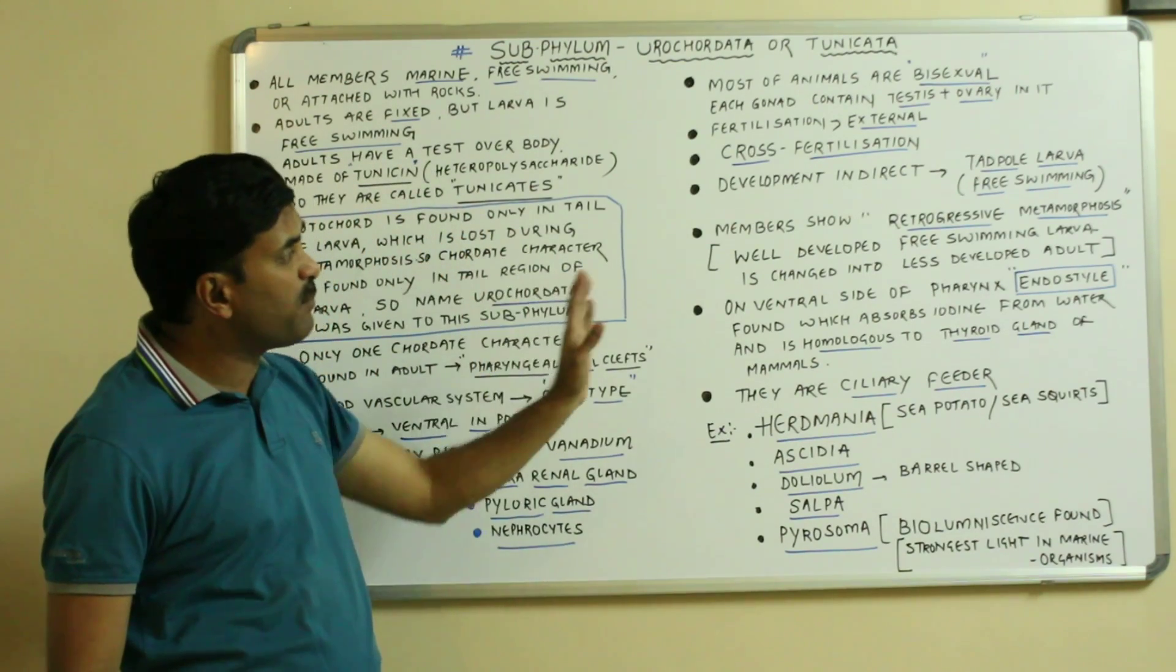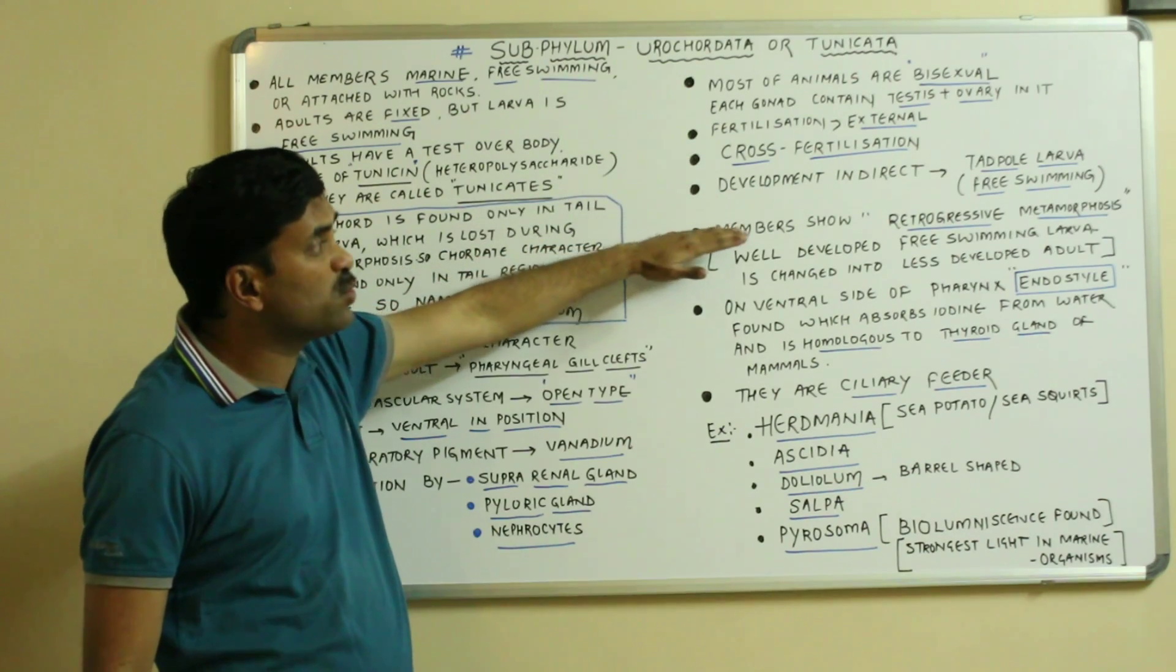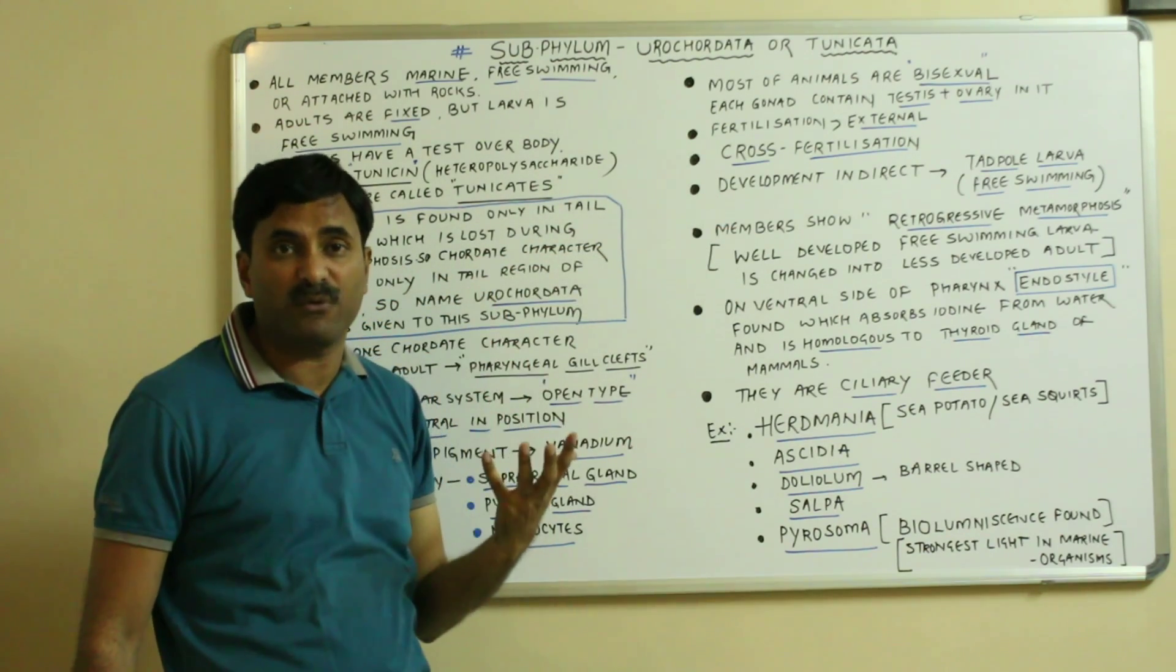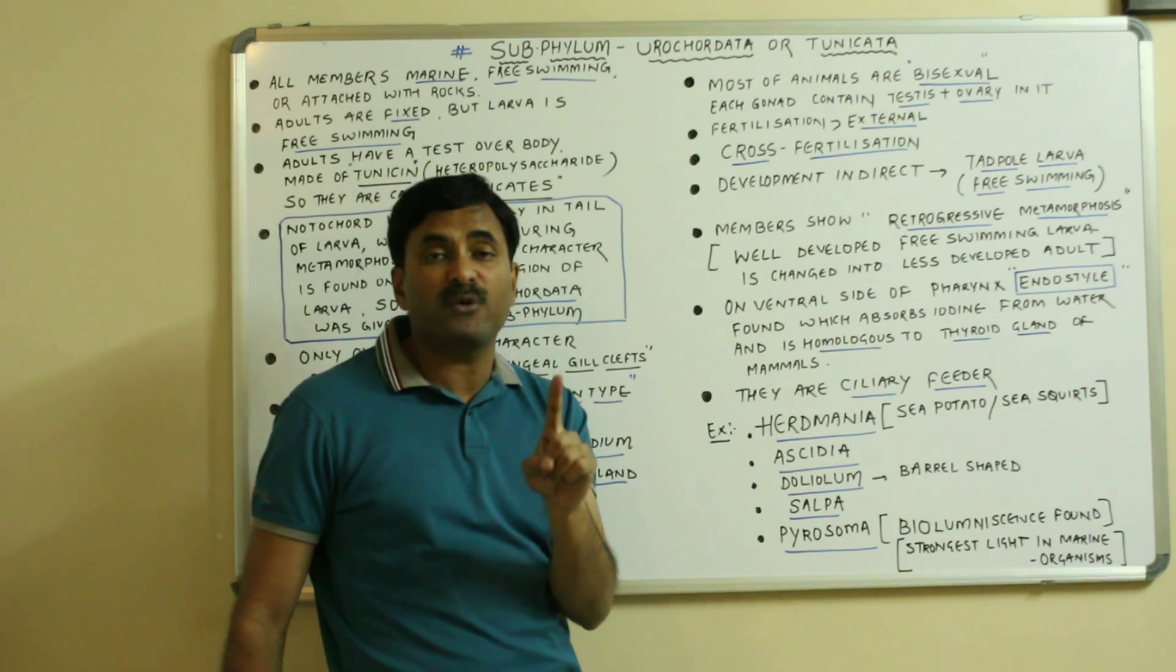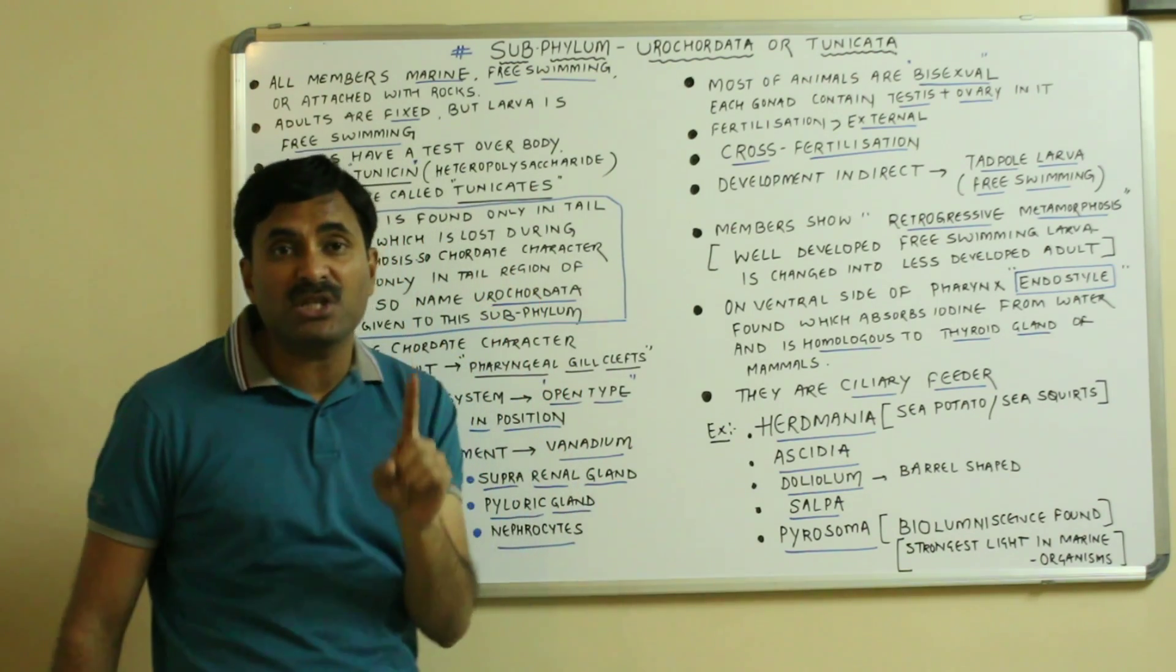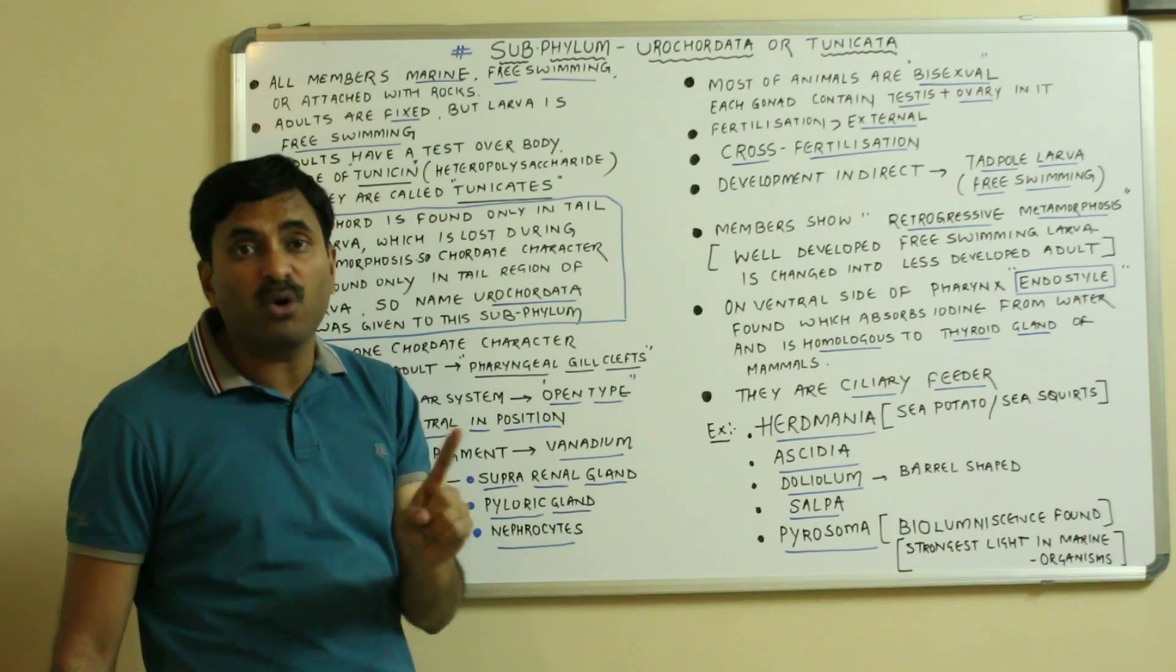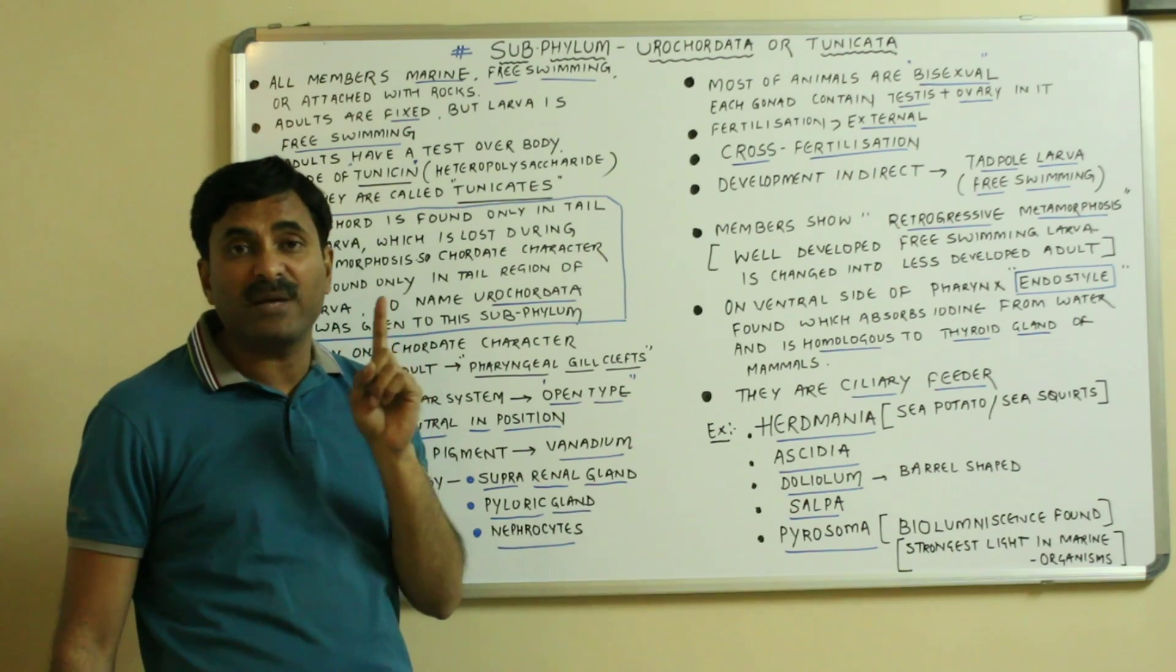This feature is very important that is the urochordate members show retrogressive metamorphosis. What is retrogressive metamorphosis? A retrogressive metamorphosis is a metamorphosis in which the larva is more developed than the adult means at the time of the metamorphosis many characters are lost in the adult.